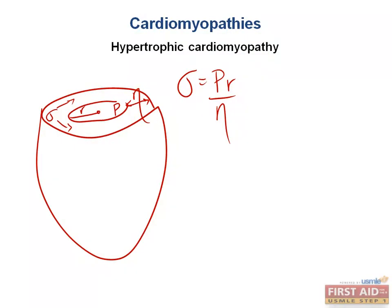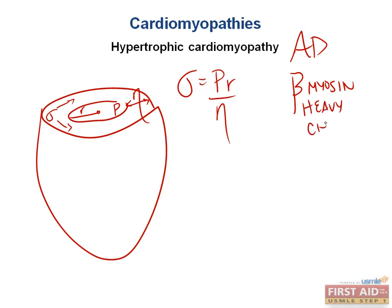Most hypertrophic cardiomyopathy cases are due to an autosomal dominant mutation in the beta-myosin heavy chain that is important for the ability of myocytes to contract. These patients actually have a poorly functioning sarcomere complex and poor contractile ability.